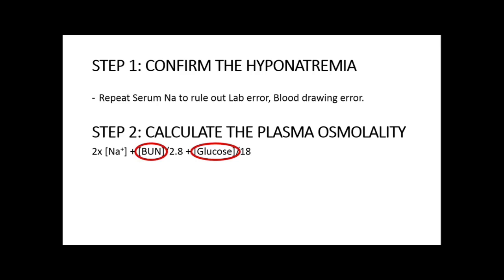Most laboratories report urea rather than BUN. To convert urea to BUN, divide the urea value by 2.14. Normal plasma osmolality is 275 to 290 milliosmol per liter. Since the first parameter in the equation is 2 times serum sodium, it heavily influences the result — so a decrease in serum sodium will obviously decrease plasma osmolality.